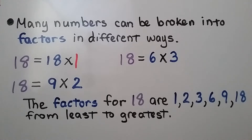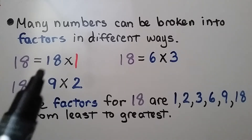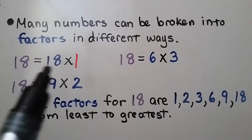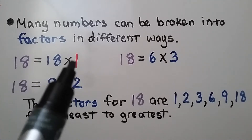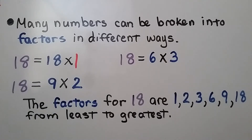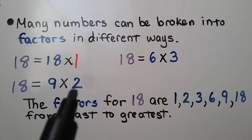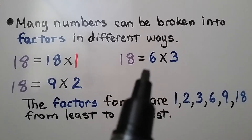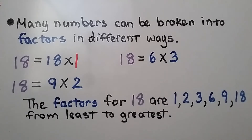Many numbers can be broken into factors in different ways. The factors for 18: 18 equals 18 times 1, giving us 18 and 1; it's also 9 times 2, giving us 9 and 2 as factors; and 18 also equals 6 times 3, giving us 6 and 3 as factors. So the factors for 18 from least to greatest are 1, 2, 3, 6, 9, and 18.